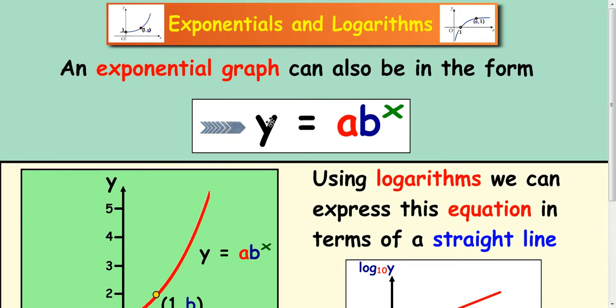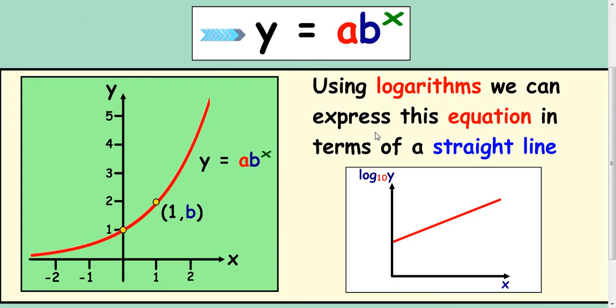Instead of y equals kx to the n, we're going to work out with y equals ab to the x. This is slightly different than the last example, since you'll need to plot log y against just x, and we'll look at why that is in a second.